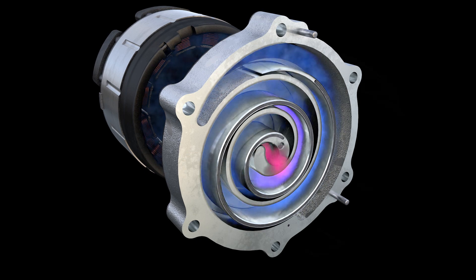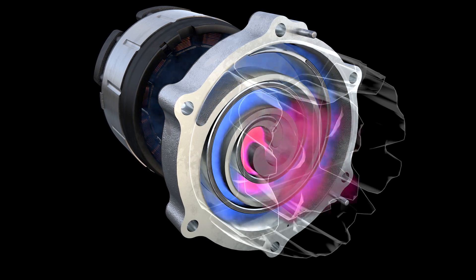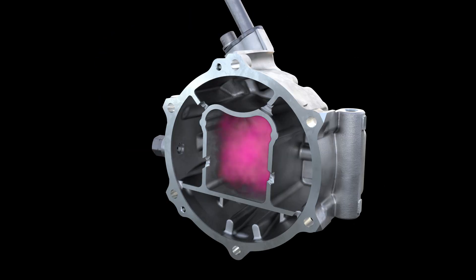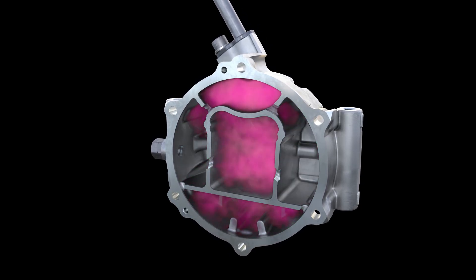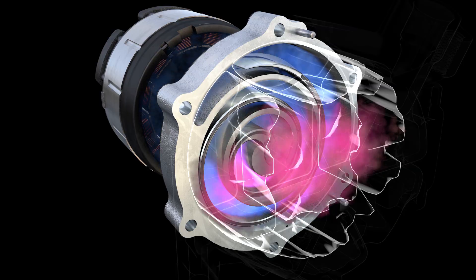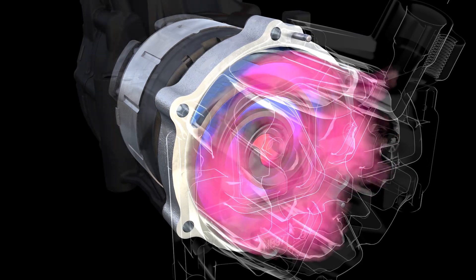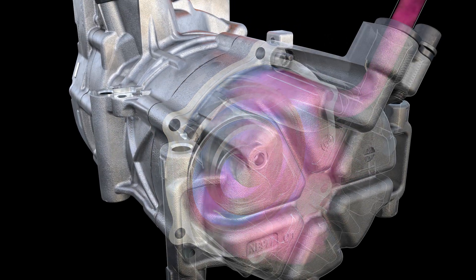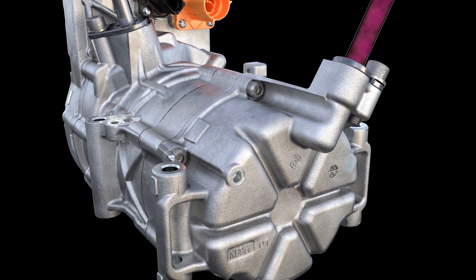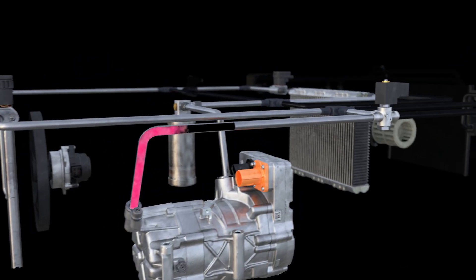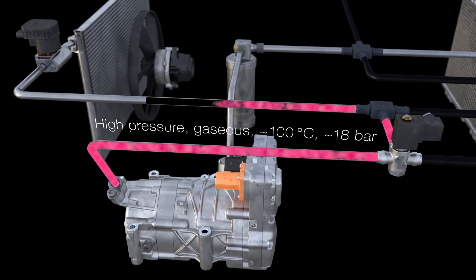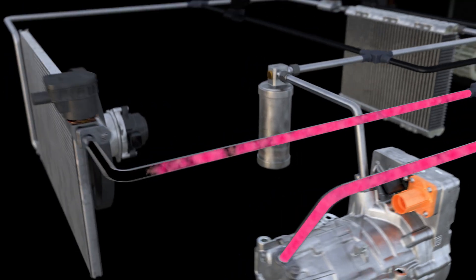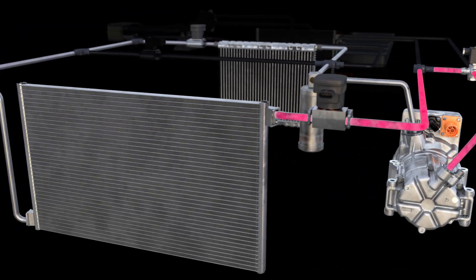Compression in turn causes the refrigerant to heat up. The refrigerant then flows into the various chambers of the housing cover. Pressure equalization in these chambers turns pulsating compression into a steady flow of gas. The now compressed gaseous refrigerant is fed to the condenser at the front of the vehicle at a pressure of around 18 bar.